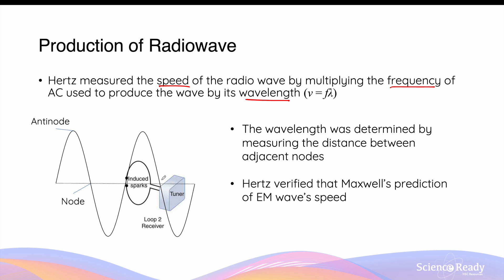Hertz adjusted the position of this loop to identify the next node, and the next node being the position where, again, there were no sparks being observed. By measuring the distance between the adjacent nodes, he was able to calculate the wavelength of the radio wave.